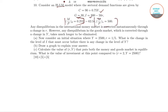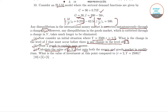Money supply is given as this. Any disequilibrium in the money market is corrected instantly through a change in small r, however any disequilibrium in the goods market, which is corrected through a change in Y, takes much longer to be eliminated. We consider an initial situation where capital Y equals 2500 and small r equals 1/5. We need to find the change in the level of I that must occur before there is any change in capital Y, then draw a graph, and finally calculate the values of small r and capital Y that put both markets in equilibrium, and find the value of investment at that point compared to r=2 and Y=2500.